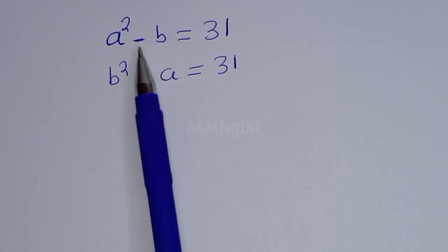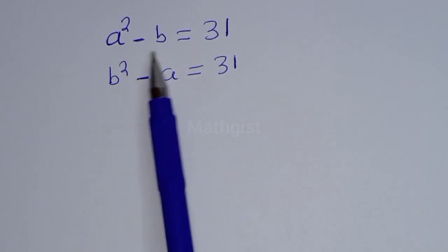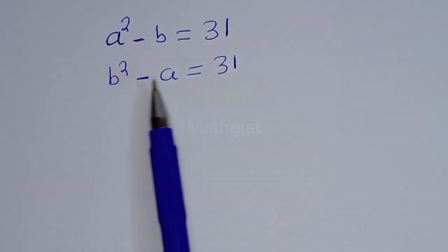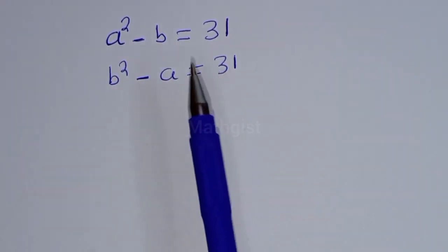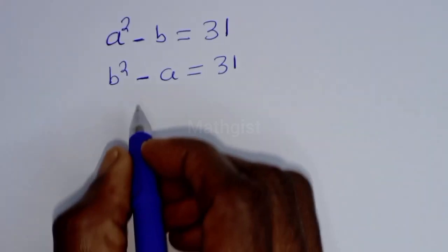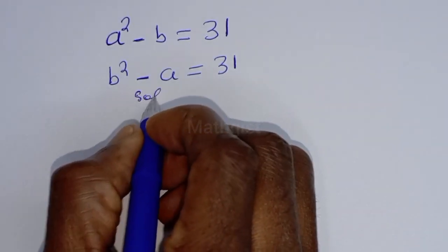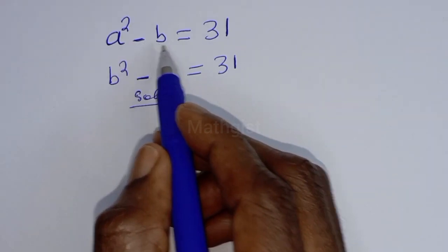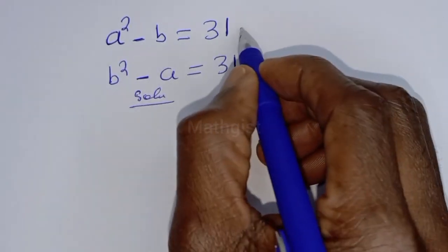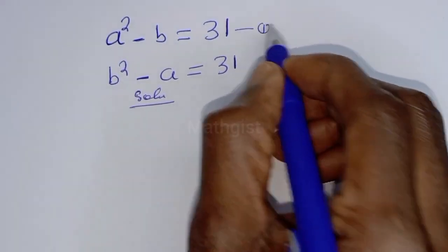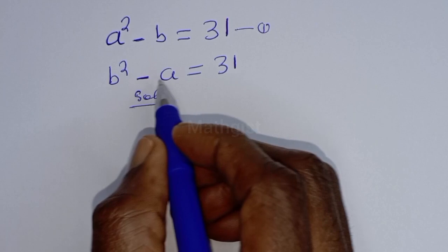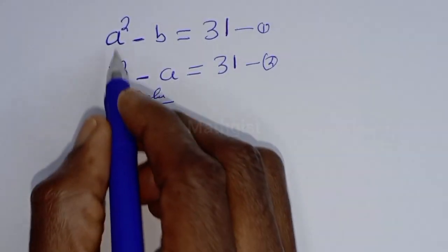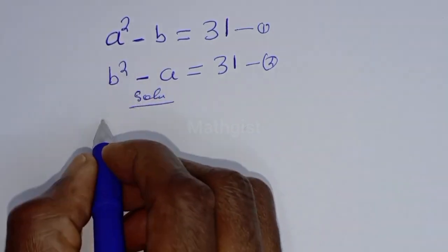How to solve for a and b from this given equation: a² - b = 31, let's call this equation 1, and b² - a = 31, let's call this equation 2. Now let's subtract equation 1 from equation 2.